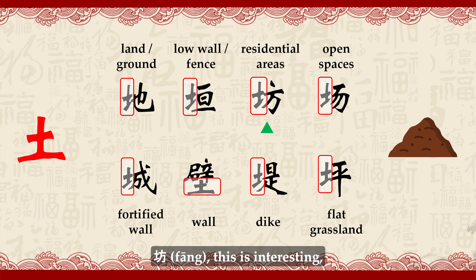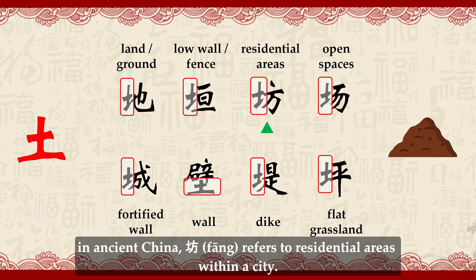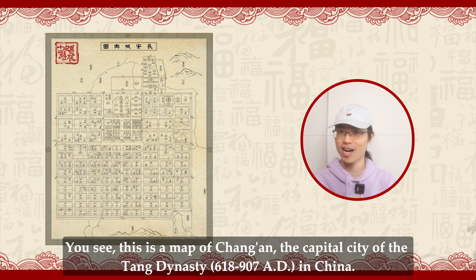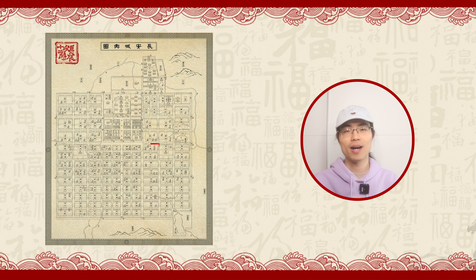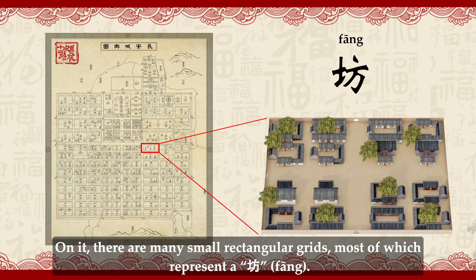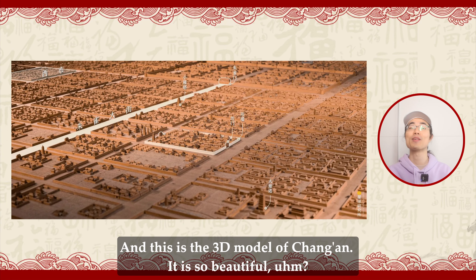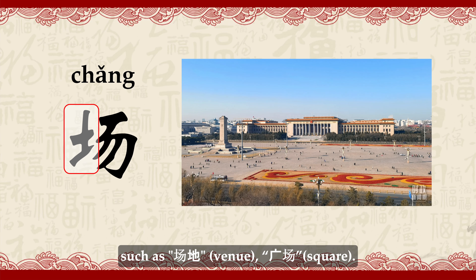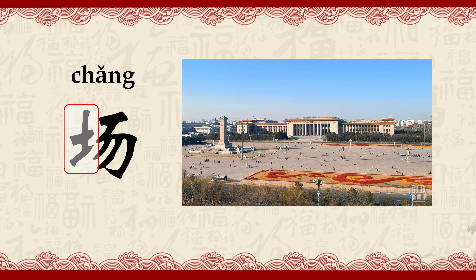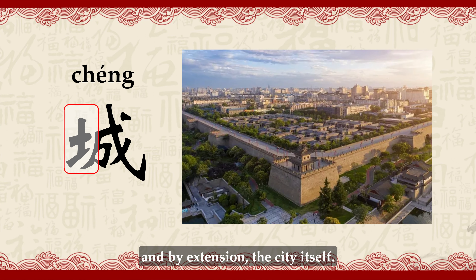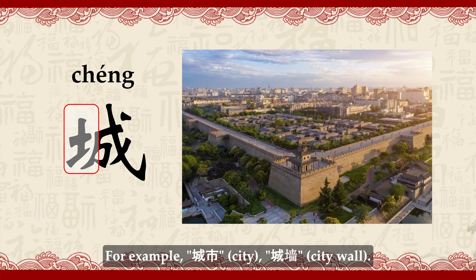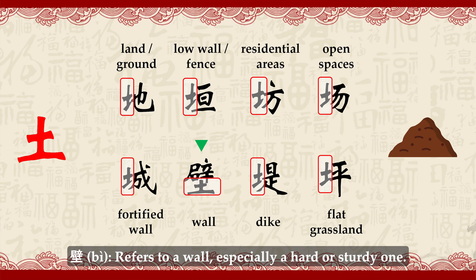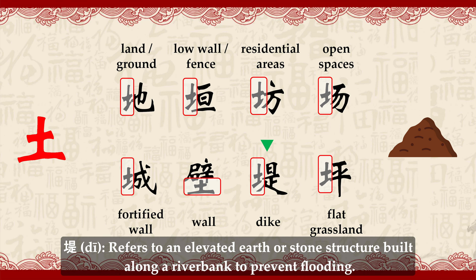Yuán (垣), referring to a low wall or fence — the walls in ancient China were built by piling up earth. Fāng (坊) — this is very interesting — in ancient China, this referred to residential areas within a city. You can see this map of Chang'an, the capital city of the Tang dynasty: on it there are many small rectangular grids, most of which represent a Fāng. And this is the 3D model of Chang'an — it is so beautiful. Chǎng (场) refers to open spaces or places where people gather and play, such as Chǎngdì (venue) or Guǎngchǎng (square).